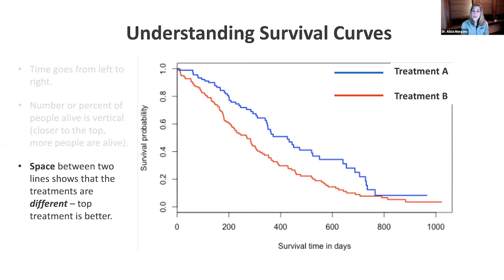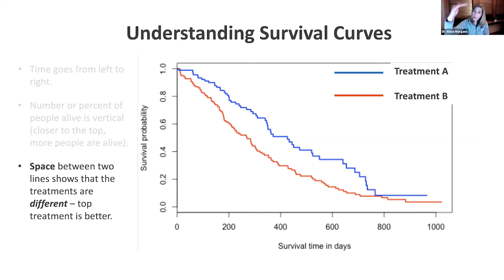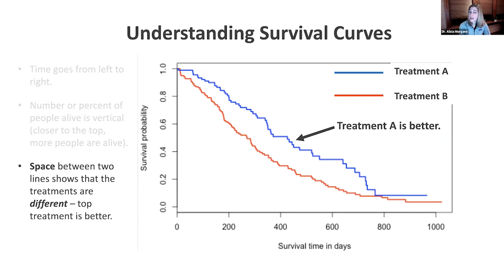The final thing: the space between these curves is what tells us there's a difference between treatment A and treatment B. If there's no difference, they're on top of each other. If there's a difference, they separate, and that shows us one treatment is better than the other. Treatment A is better than treatment B here — treatment A is higher up, so that blue line is better. Treatments are going to be better if they're higher up on that graph.